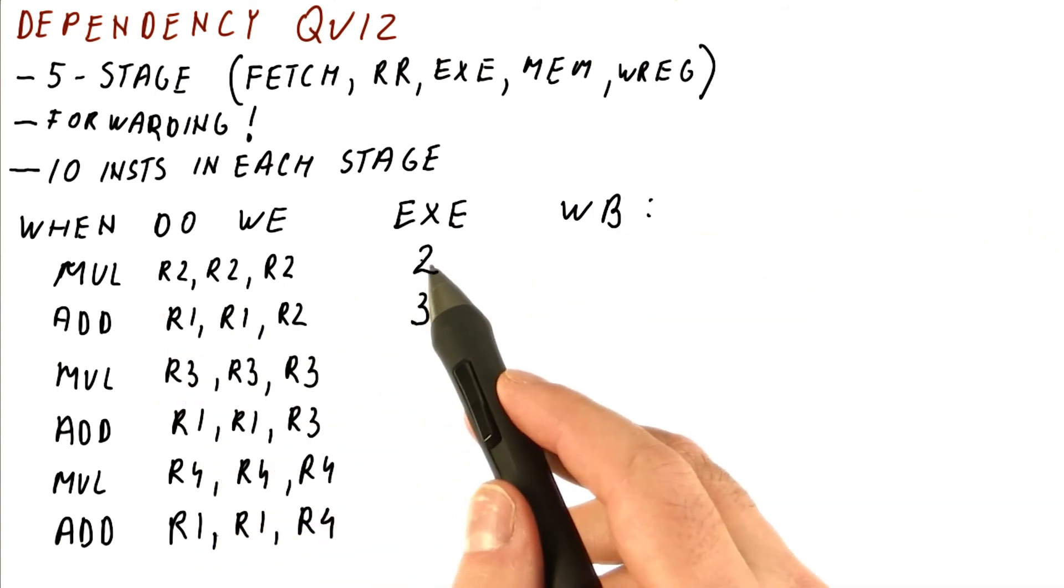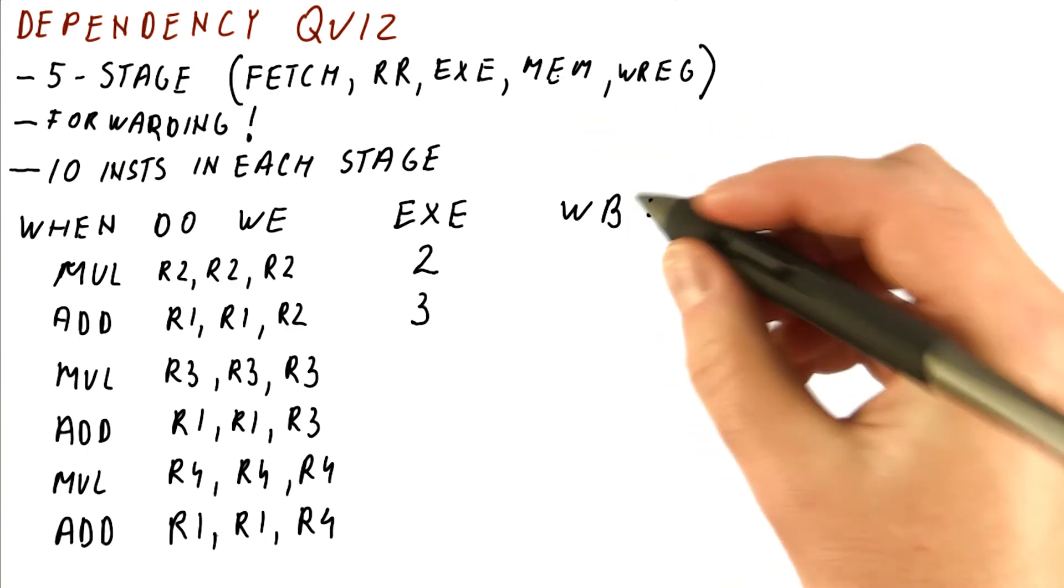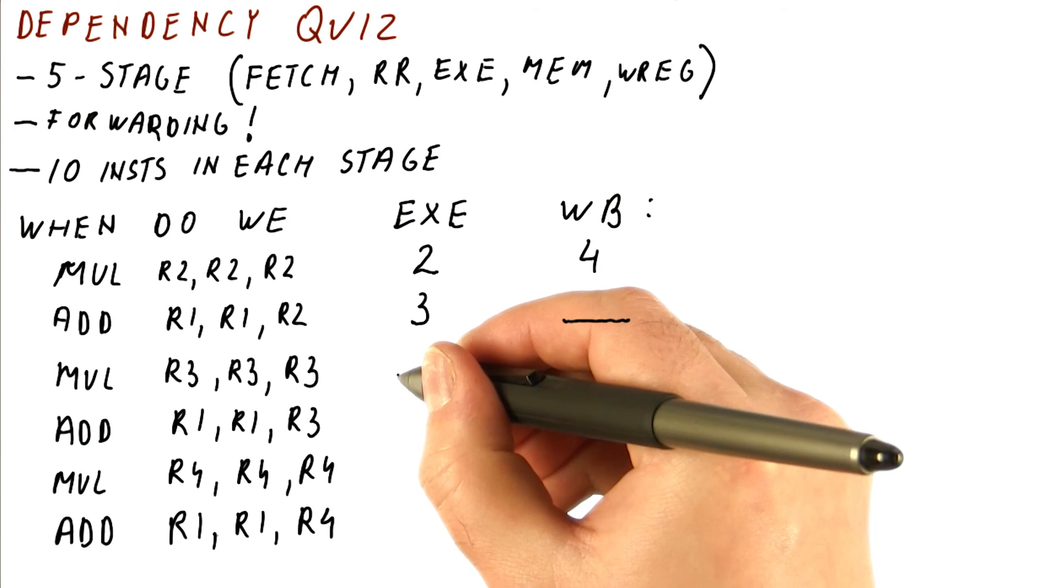If you look at the MUL, because it has executed in cycle two, it will go through the MEM stage in cycle three and write its result in cycle four. The question is, when are these others? In what cycles are they producing and writing the results?